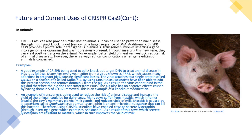An example of CRISPR-Cas9 being used to knockout a target DNA sequence to treat animal disease is PRRS in pigs. Many pigs every year suffer from a virus known as PRRS, which causes abortions in pregnant pigs and significant losses for farmers. The virus attaches to a protein called CD163, specifically on a section called Domain 5. Using CRISPR-Cas9, scientists edited this protein and removed Domain 5 from the pig. As a result, the virus cannot bind in the pig, the pig does not suffer from PRRS, and there are no negative effects from having Domain 5 removed — an example of a knockout modification.